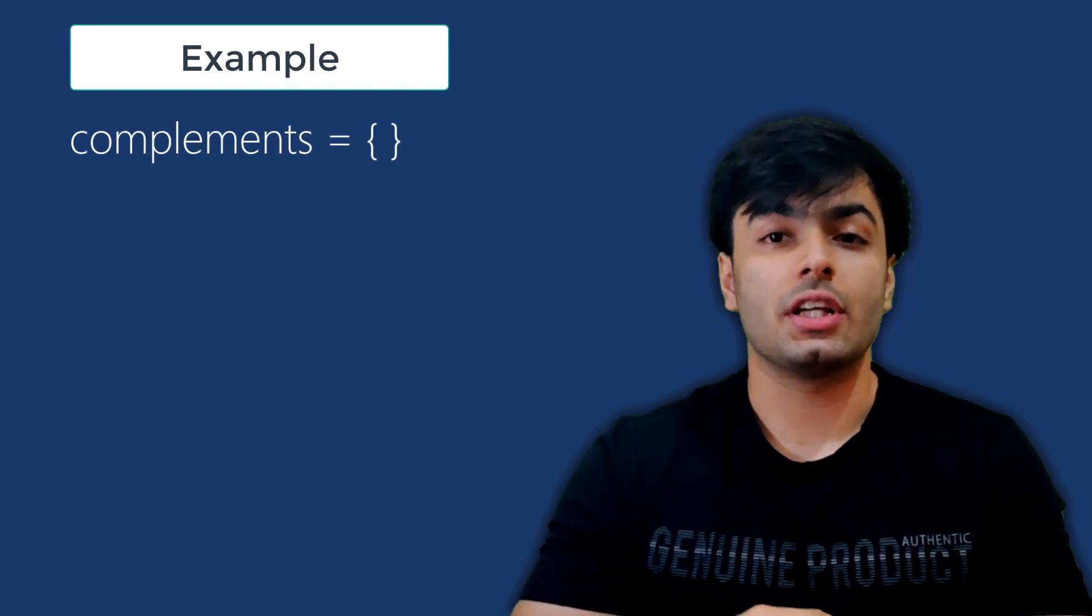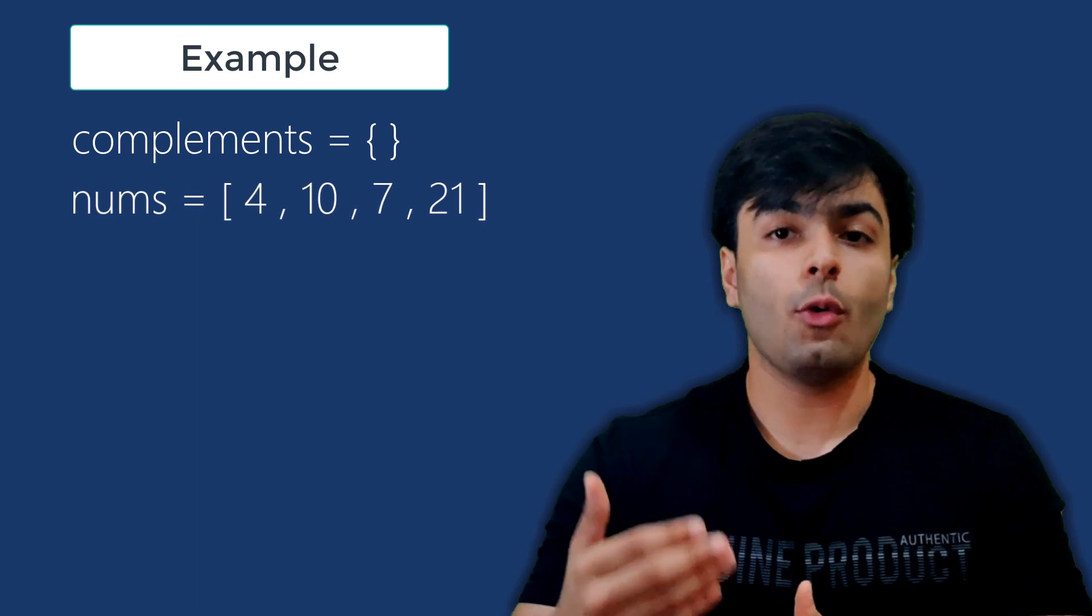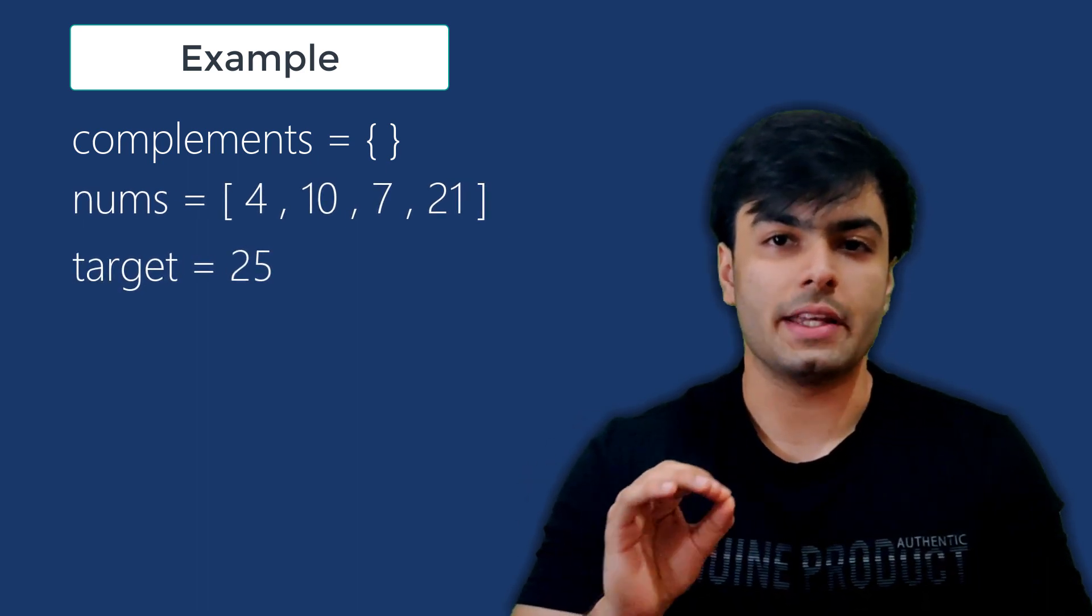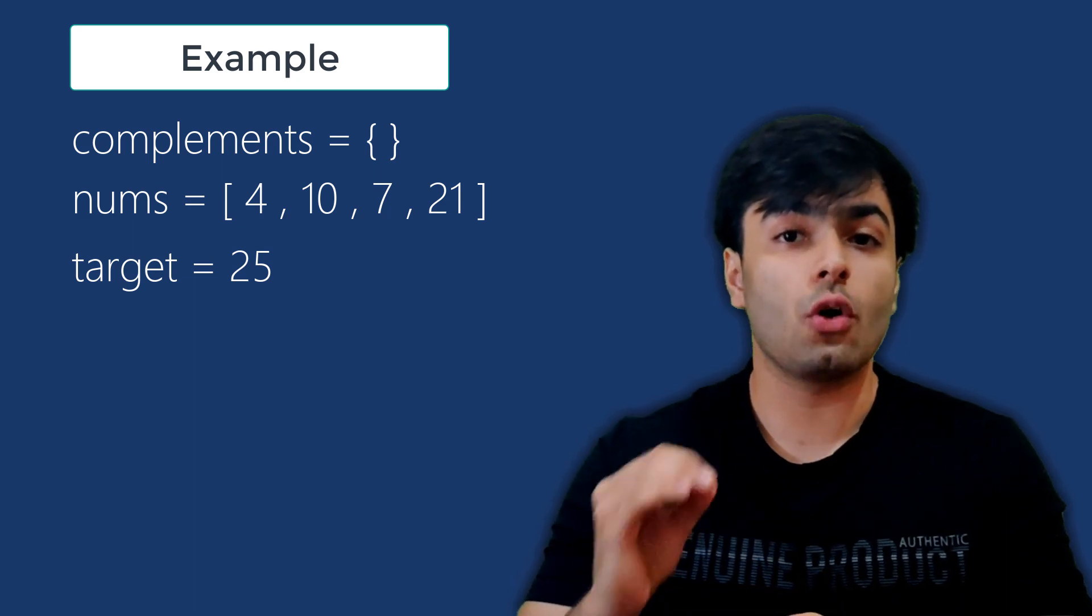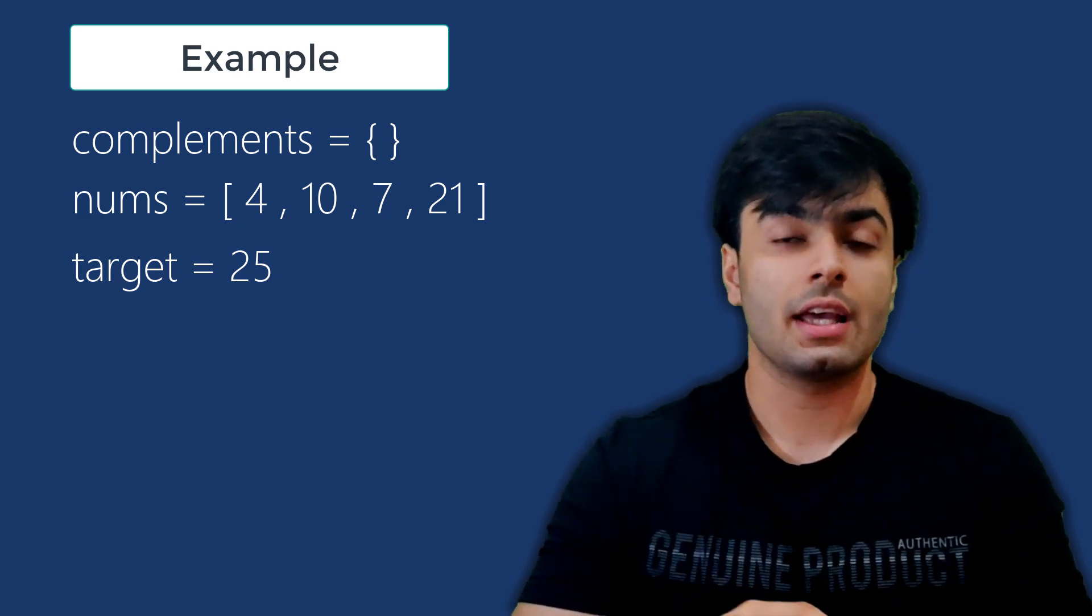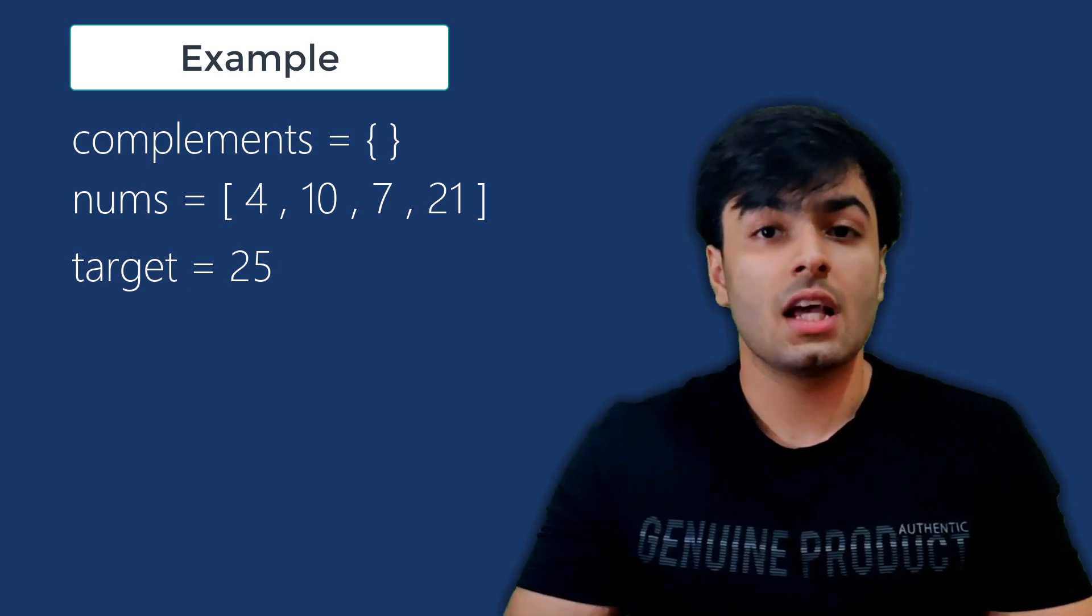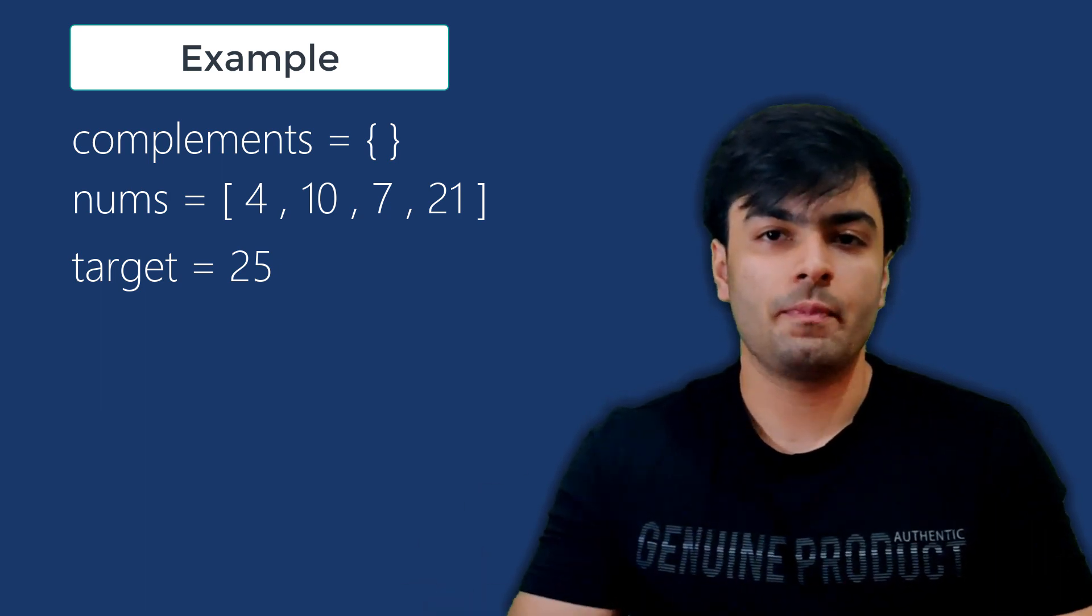Let's say we have an empty dictionary called complements, and we have the following list of numbers, 4, 10, 7, and 21, and that our target value is 25. For each number in the list, we first check if it is also one of the keys in the dictionary. If not, we can create an element in our dictionary called complements with the keys set to the complement and the value to the index number.